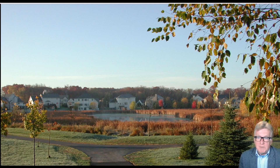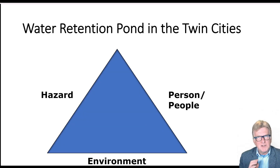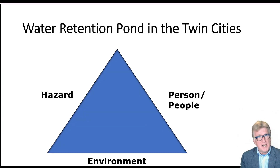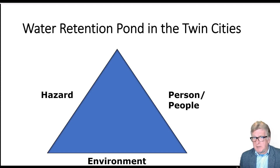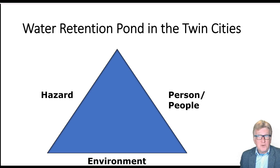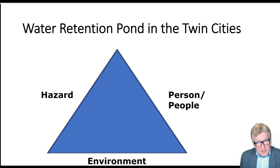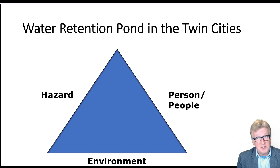You might look at this and say, going back to the host-agent-environment model, how does that interact? We have a hazard — we've got a pond. Do we have people? Absolutely — we're in a residential neighborhood with a lot of children. This neighborhood was known for having lots of kids. And we also have an environment where all of these things come together.